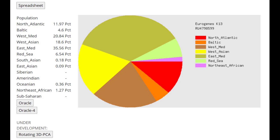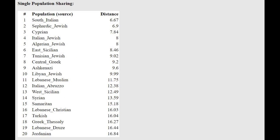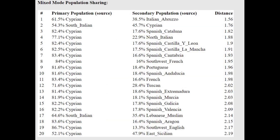He's scoring way too much East Mediterranean, way too little North European components, and way too much Eastern Mediterranean and Red Sea related stuff. With the Oracle, he's closest to South Italians and Sephardic Jews rather than Central Italians from Rome or North Italy. He's actually being modelled as a mixture of Cypriot plus Italian from Abruzzo, which is in the south of Italy.